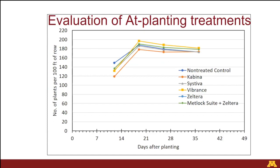Some of the standard seed treatments are labeled right now and everything looked pretty good. Cabina was a little bit lower during emergence but caught up with everything else. Systiva, Vibrance, Xeltera was pretty good too — Xeltera is very close to Systiva. And then Metlock Sweet and Xeltera. They all did relatively well. Statistically, there are no significant differences between seed treatments. Some of the in-furrow products actually hurt some of the early stands.